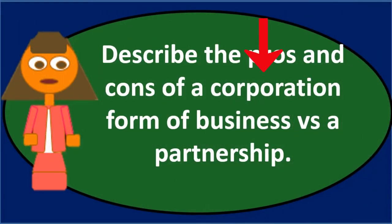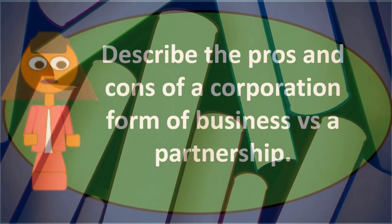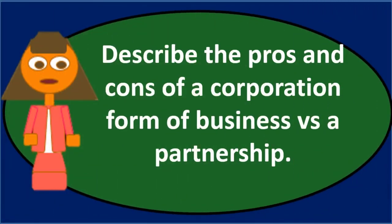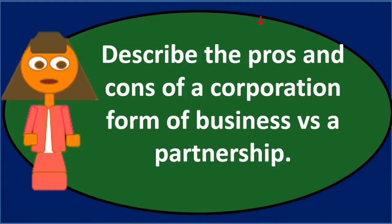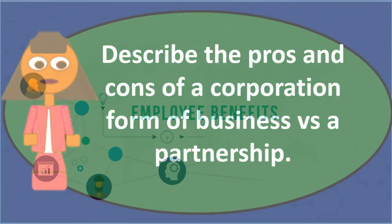A corporation has been attributed human characteristics, whereas a partnership has not. From a bookkeeping standpoint, we always keep books separate from the owners for both entity types. But from a legal standpoint, if you sue a partnership, you can still go after the partners' personal assets. If you sue a corporation, you can typically only go after the corporation itself — that liability protection is one of the big benefits of the corporate form.